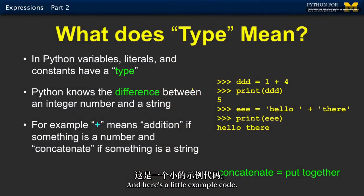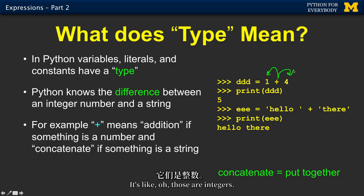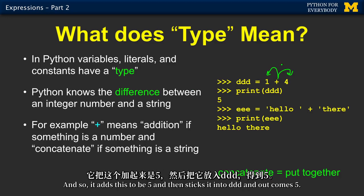And here's a little example code. We have this plus operator. And the plus operator is looking at its two operands, one and four, is like, oh, those are integers. I know what to do with integers. That means addition. And so it adds this to be five and then sticks it into ddd, and out comes five.